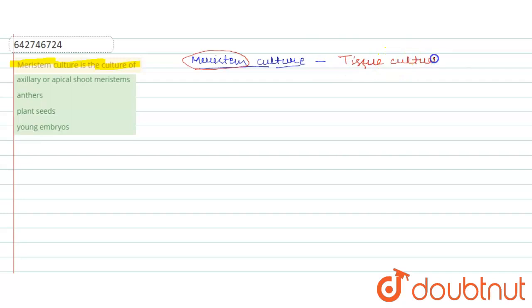by which we can generate a healthy plant from diseased plant.